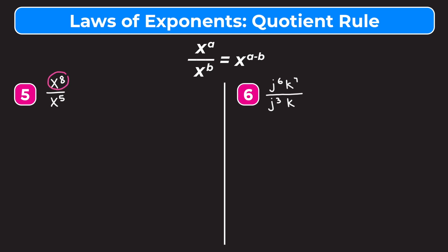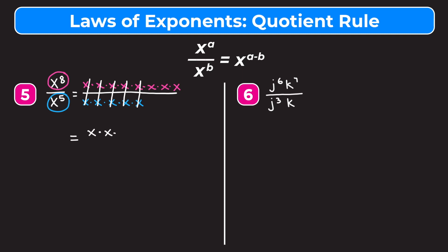For example five we have x to the eighth over x to the fifth. If I write this out as the product of x's, on the top I'll have eight x's multiplied together and on the bottom five x's multiplied together. Anytime we have a common factor on the top and bottom of a fraction, we can cancel them out because they divide to one. We cancel five pairs of x over x, and what we're left with is x times x times x on top, which is x to the third. So the shortcut is x to the eighth over x to the fifth equals x to the eighth minus five, which is x to the third. When dividing two exponential terms with the same base, we subtract their exponents.